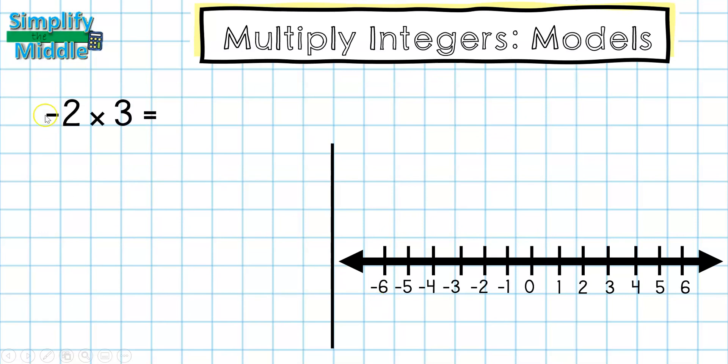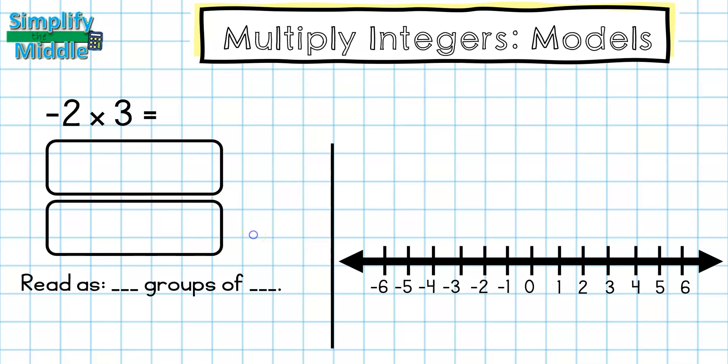What happens when the groups in the front are the thing that has the negative sign? Well, this right here is going to be read as the opposite of two groups of three. So we're going to look at what that means. First, let's make our two groups. Then we're going to put three counters in them each. Now, because this is positive, I'm going to put a positive 3 inside each of them.